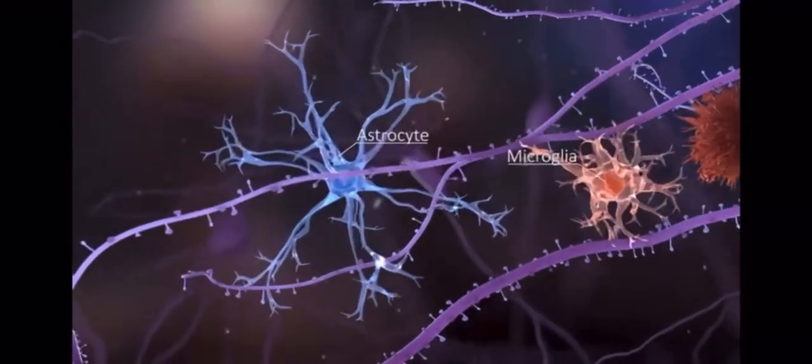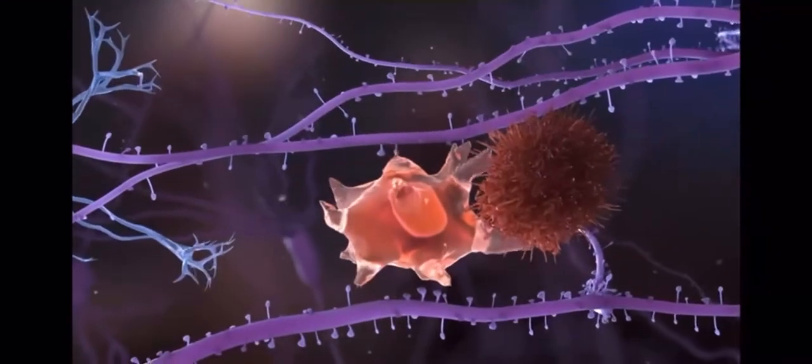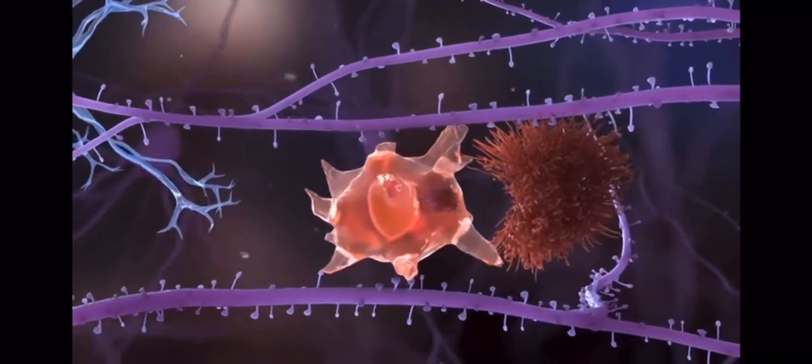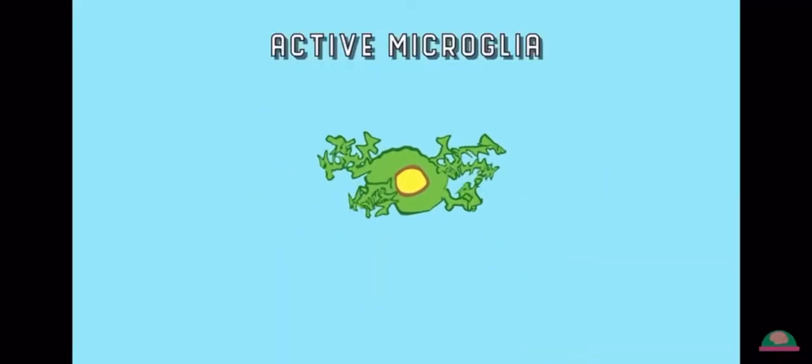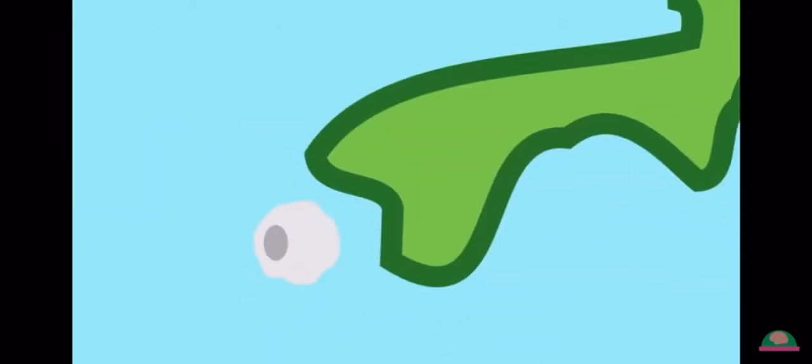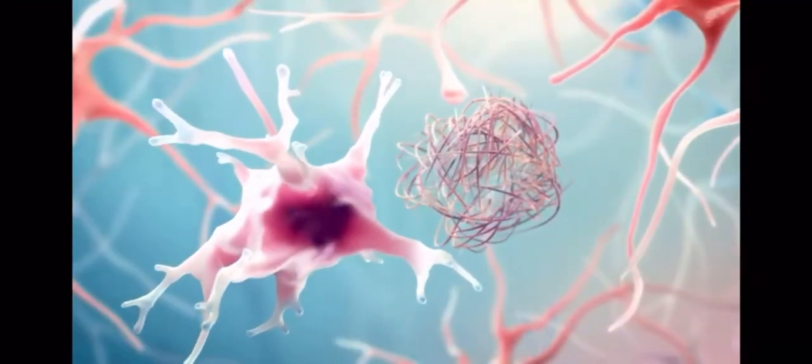But astrocytes and microglia play a large role to mitigate these effects. Microglia are immune cells that remove damaged or mutated neurons. Once activated, microglia multiply and begin to locate denatured neurons, engaging in phagocytosis with pathological protein aggregates.